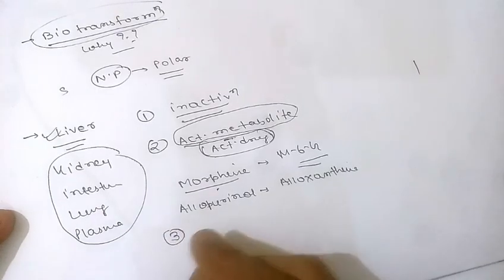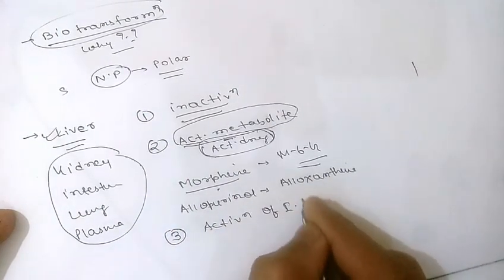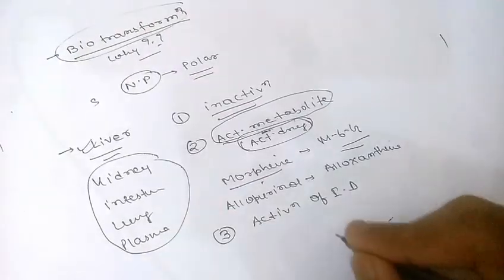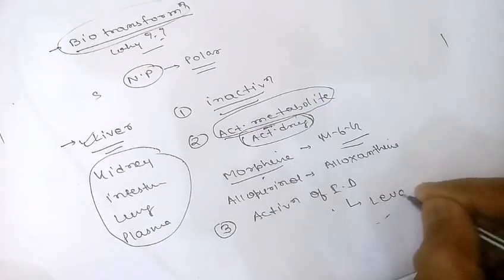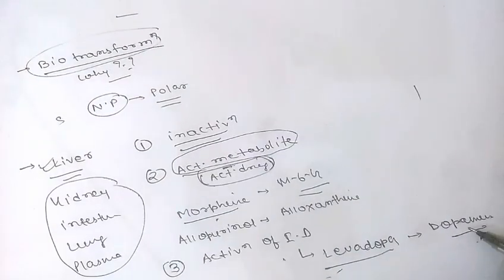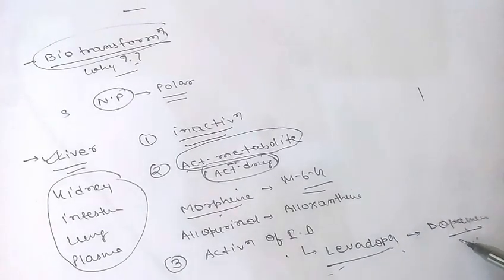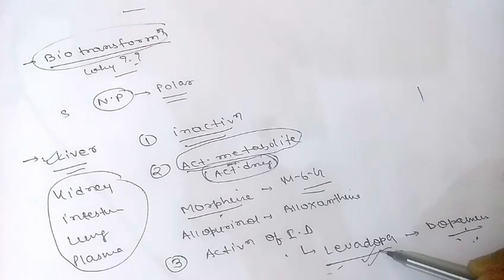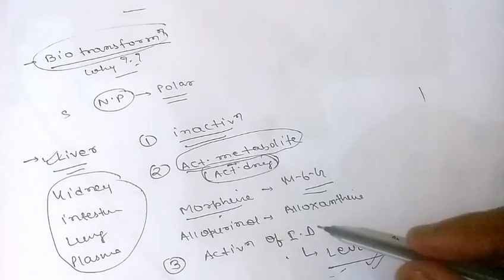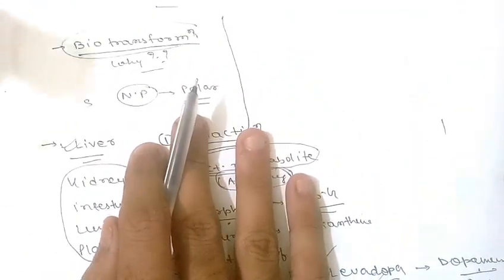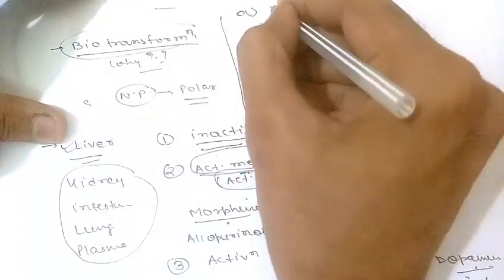The third outcome is activation of an inactive drug — a prodrug. An inactive drug is converted into an active drug by biotransformation. For example, levodopa is converted into its active form, dopamine. Other examples include enalapril converted to enalaprilate, alpha-methyldopa converted to alpha-methyl norepinephrine, and proguanil converted to cycloguanil.